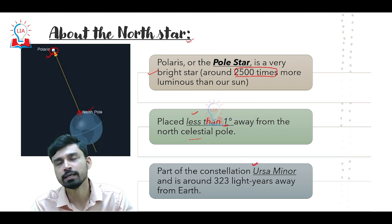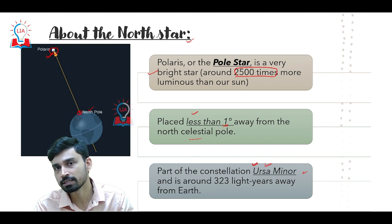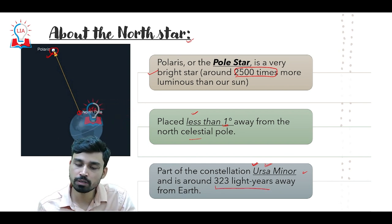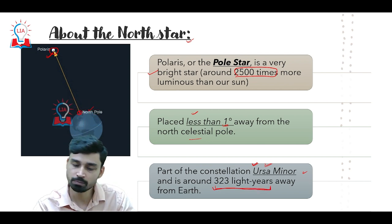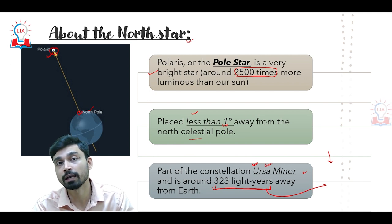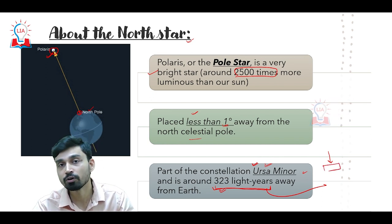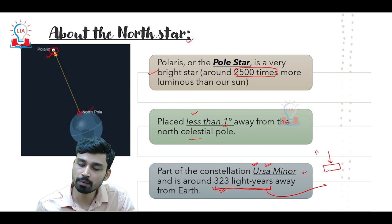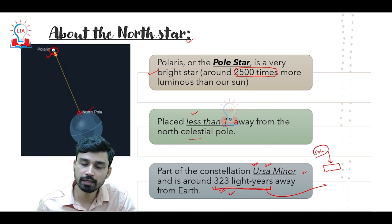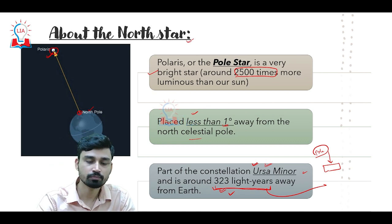Most stars in outer space are part of some constellation, and similarly Polaris or the pole star is part of the constellation called Ursa Minor. The distance of this star from the earth is about 323 light years. This means light emanating from the pole star right now will take 323 years to reach the earth. So if the pole star were to vanish today, we would not know for 323 years — when we look at it, we are seeing 323 years into the past.